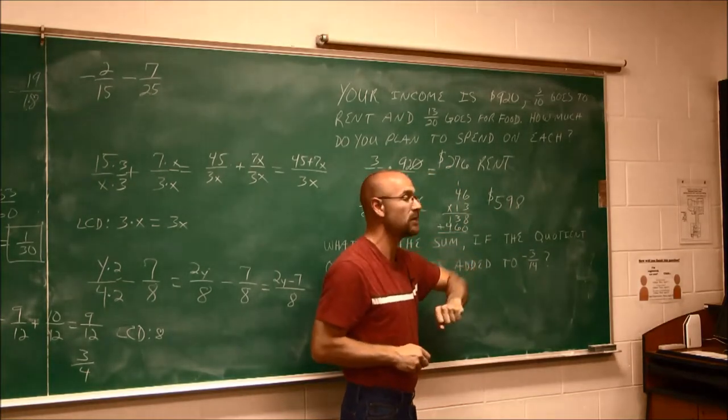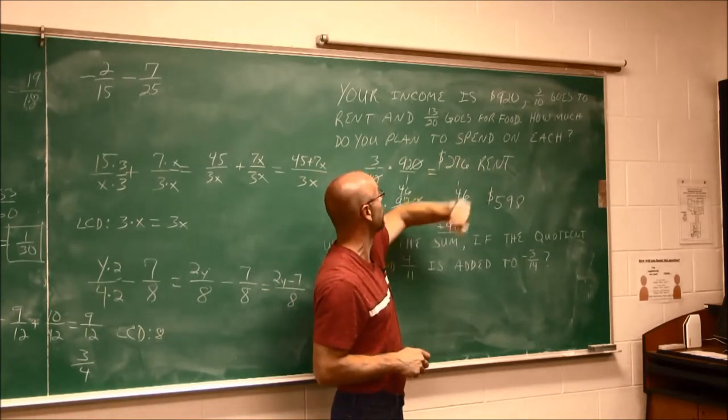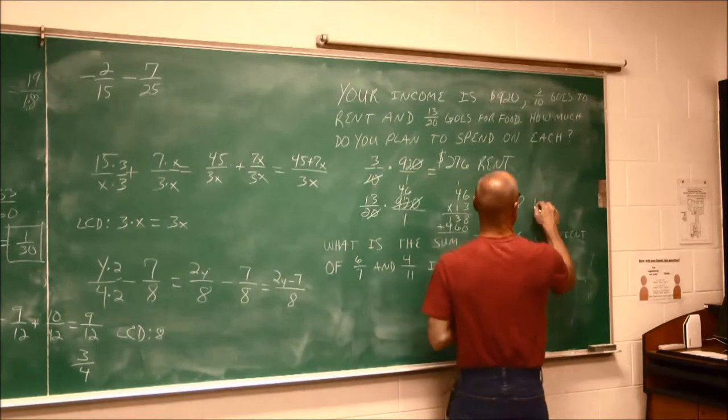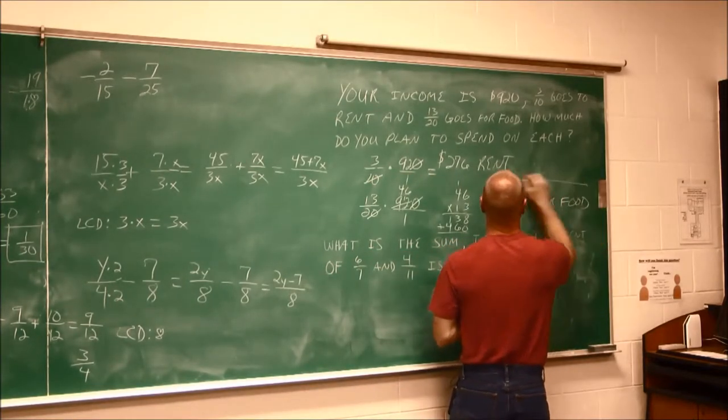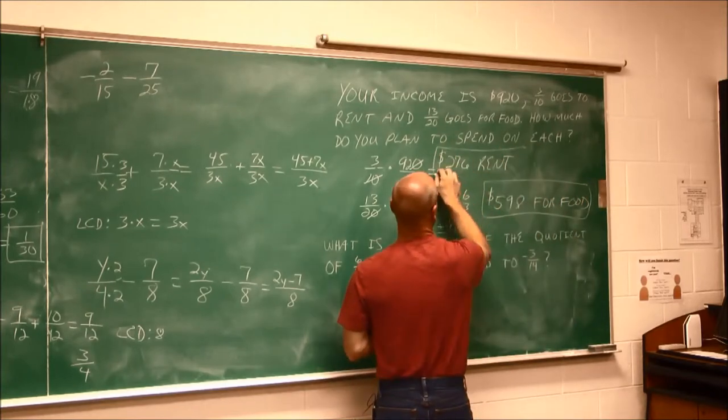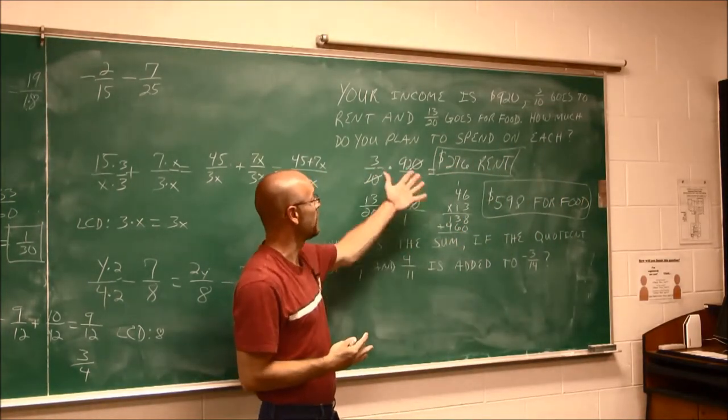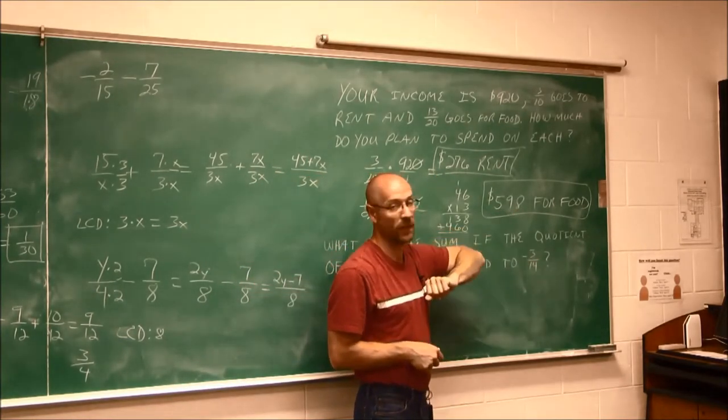Well, this 598, what does it apply to? Well, $598 of our income is to be spent on food. So we found the fractions of the income that apply to either rent, $276, or food, $598.